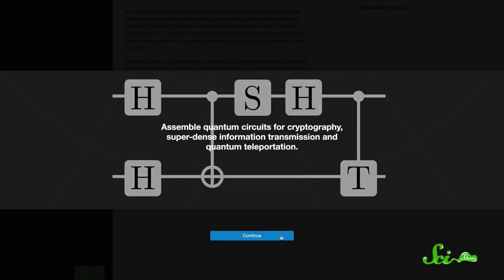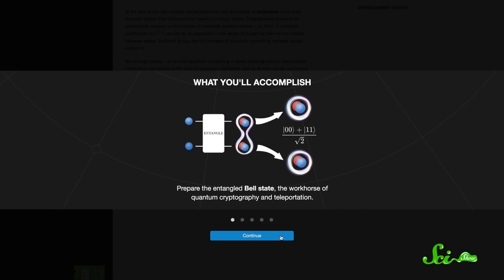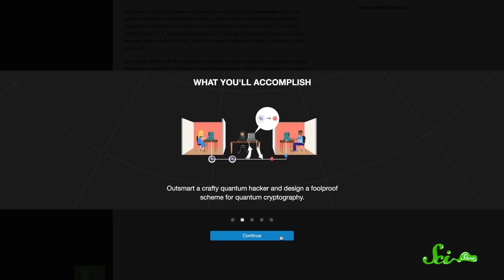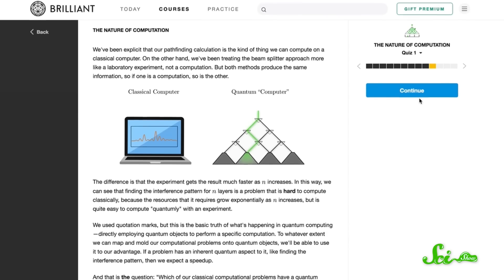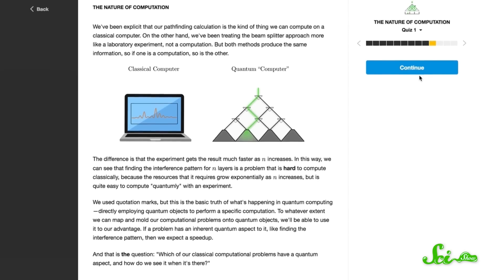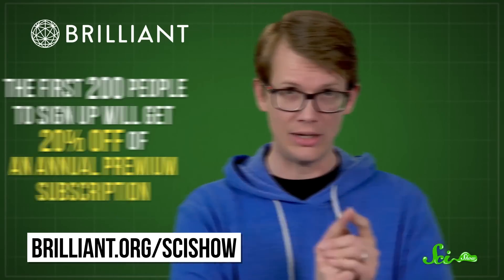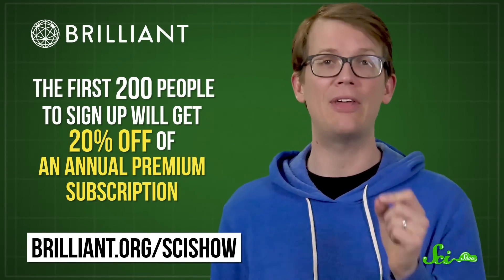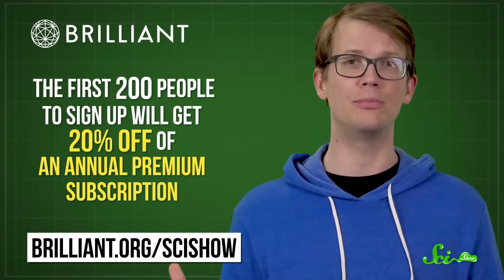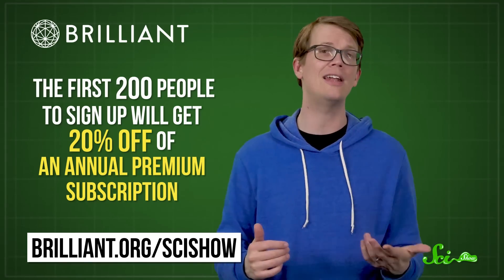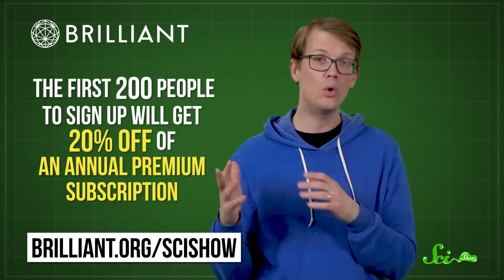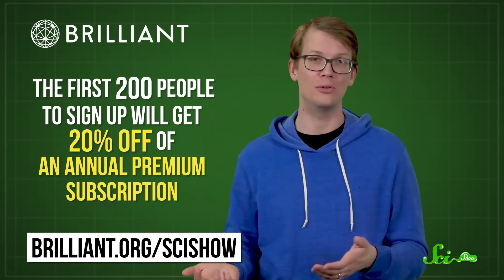And if you enjoy exploring theories like this, I think you'll like the quantum computing course on Brilliant.org, where you'll learn about the laws of quantum mechanics by building your own quantum circuit, and racing a classical computer in solving code-breaking puzzles. You can check it out at Brilliant.org slash SciShow. And right now, the first 200 people to sign up at that link will get 20% off an annual premium subscription to Brilliant. So head to Brilliant.org slash SciShow to learn more and check it out. And know that when you do, you are also helping to support SciShow. So thanks.